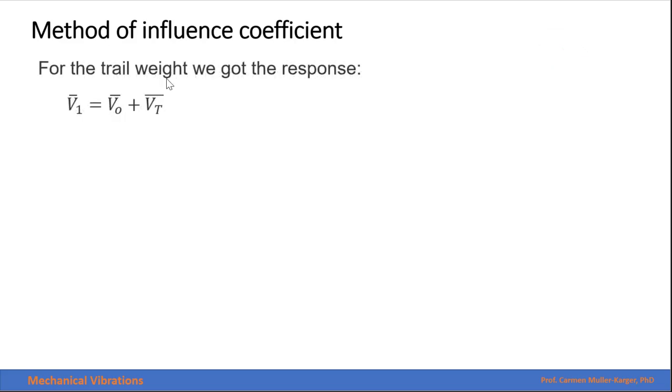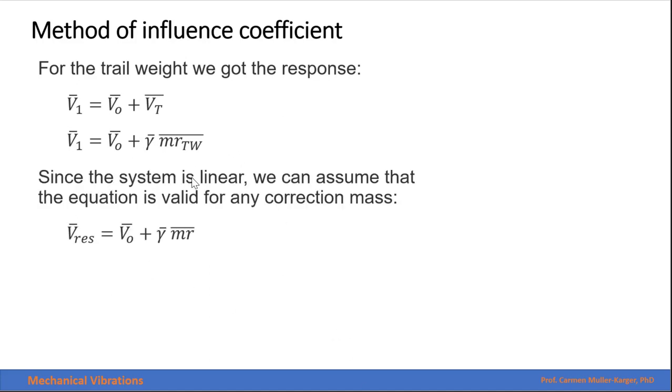When we place the trial weight in the rotor, we get this response. We can write the component in respect to the trial weight in terms of the influence coefficient. Since the system is linear, we can assume that if we put a different correction weight, we will get a different response. So this equation is valid for any correction mass.